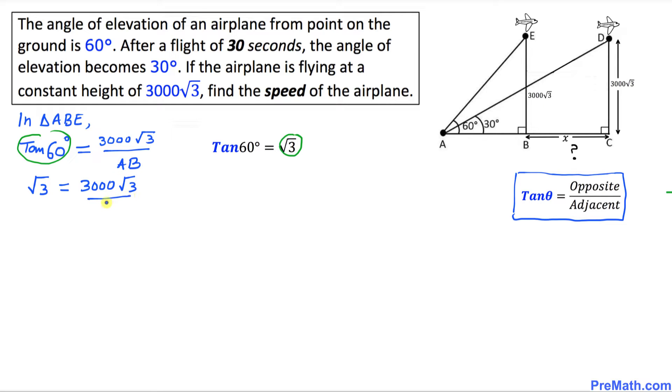Here I can write √3 as √3/1, and I am going to cross multiply. If you do this thing, √3 times AB equals 3000√3.